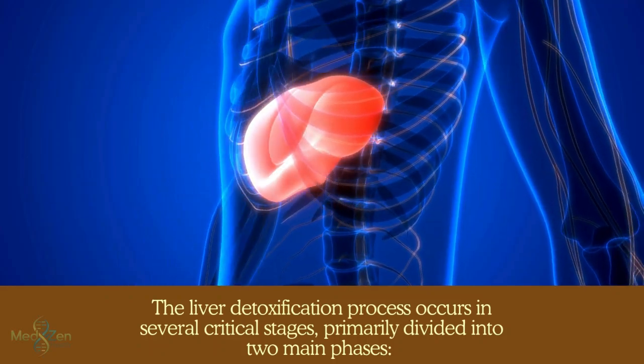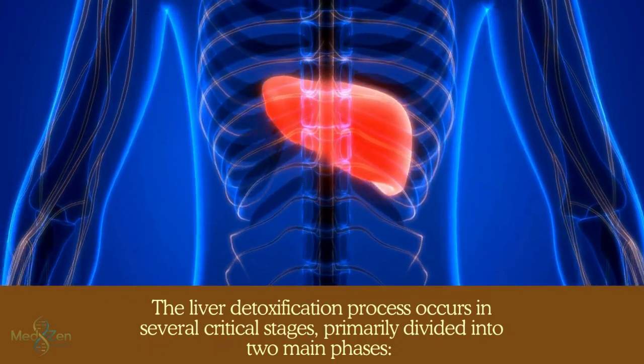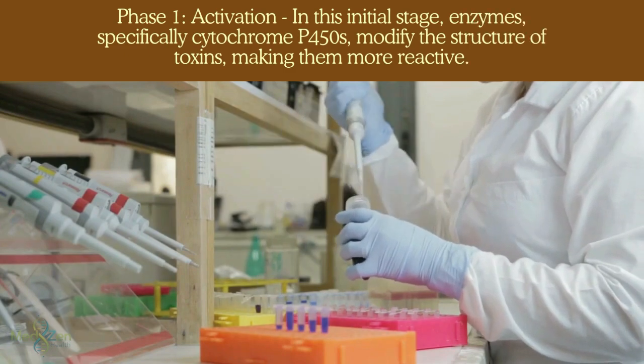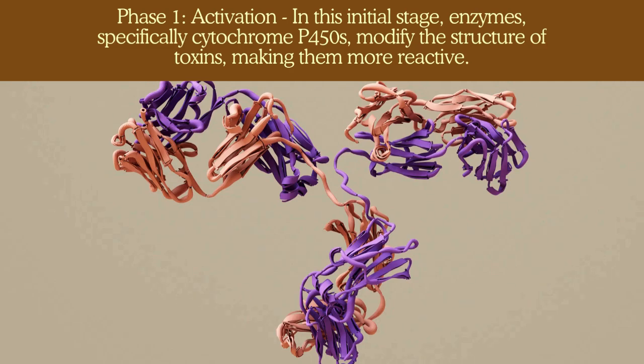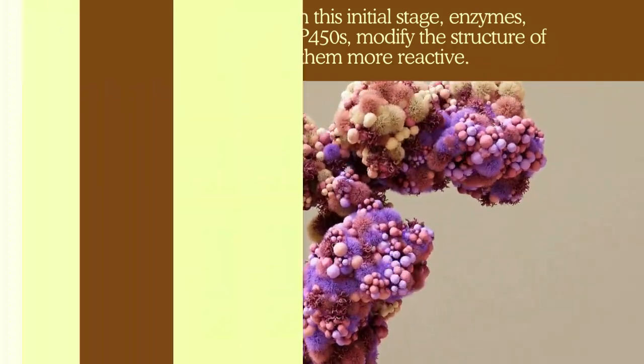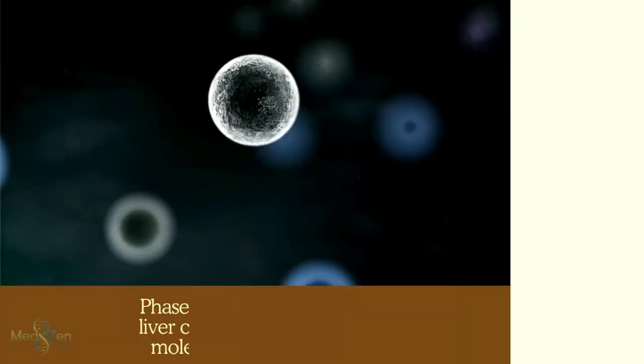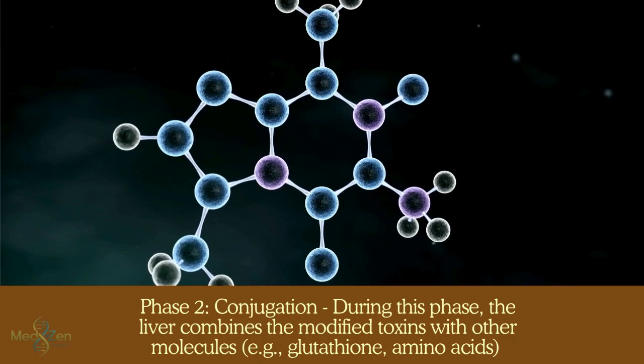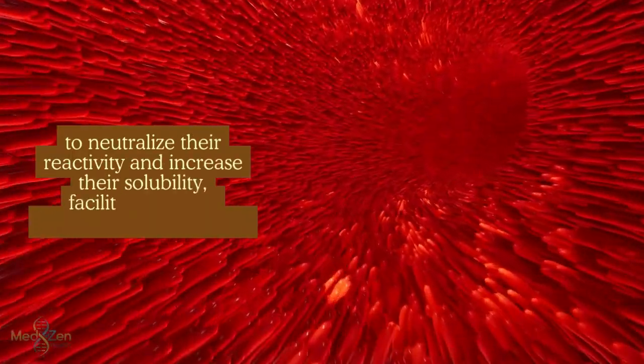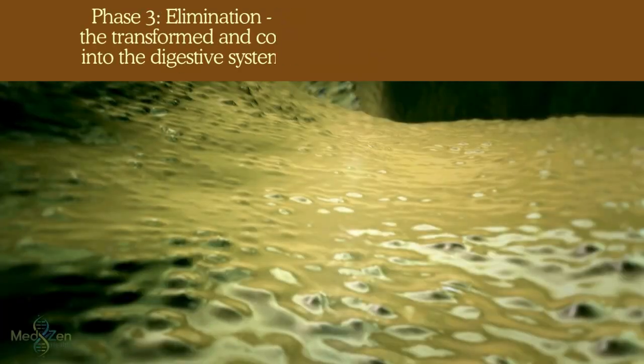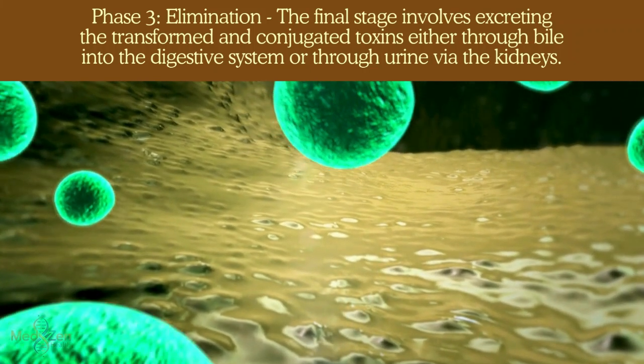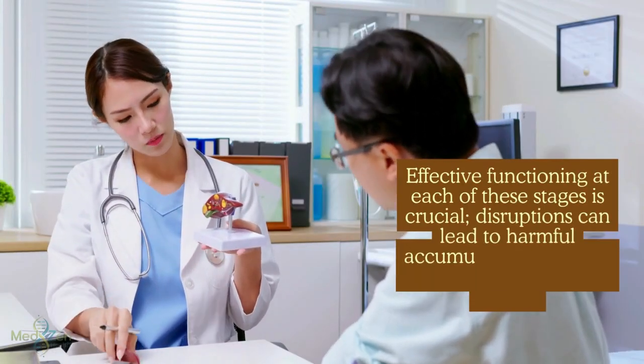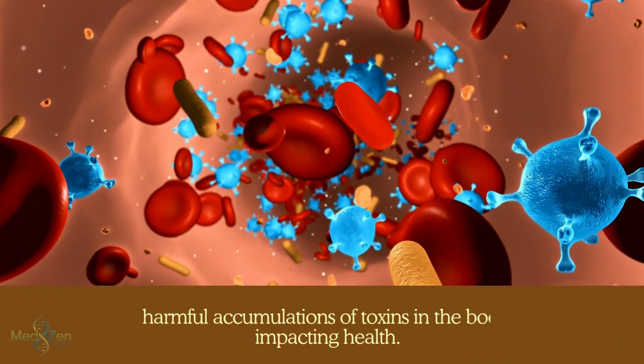The liver detoxification process occurs in several critical stages, primarily divided into two main phases, phase one and phase two, with a third phase involved in elimination. Phase one, activation: In this initial stage, enzymes, specifically cytochrome P450s, modify the structure of toxins, making them more reactive. This transformation prepares these toxins for further processing. Phase two, conjugation: During this phase, the liver combines the modified toxins with other molecules, for example glutathione or amino acids, to neutralize their reactivity and increase their solubility, facilitating easier excretion from the body. Phase three, elimination: The final stage involves excreting the transformed and conjugated toxins either through bile into the digestive system or through urine by the kidneys. Effective functioning at each of these stages is crucial. Disruptions can lead to harmful accumulations of toxins in the body, impacting health.